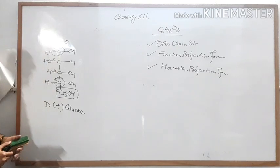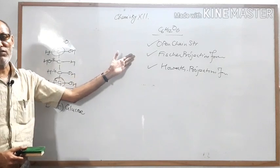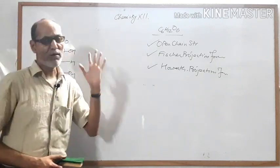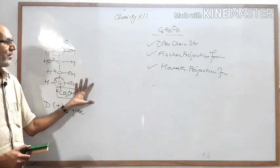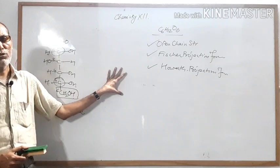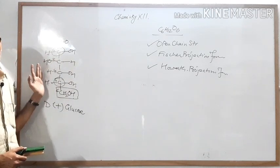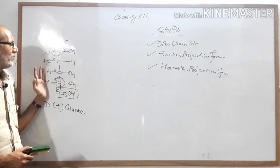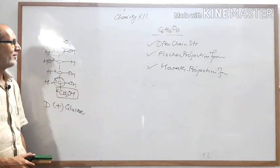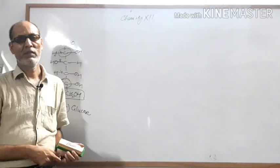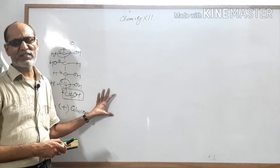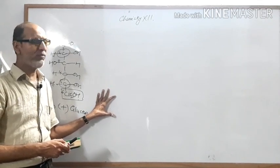Now moving to the second form — the Fischer projection formula. To draw the Fischer projection formula, you must use the open chain structure as its basis. Without that structure you cannot prepare or draw the Fischer projection formula.